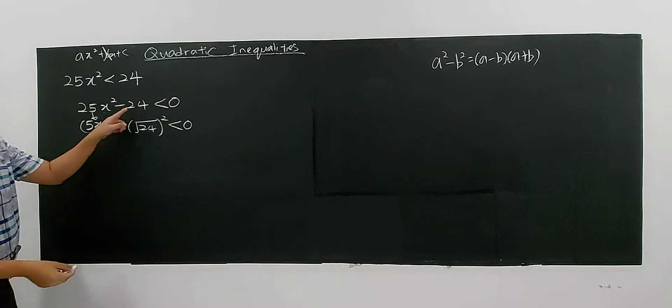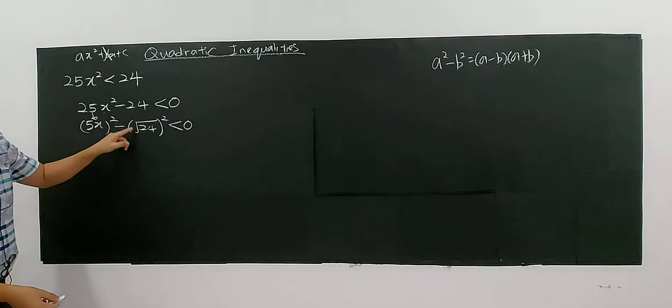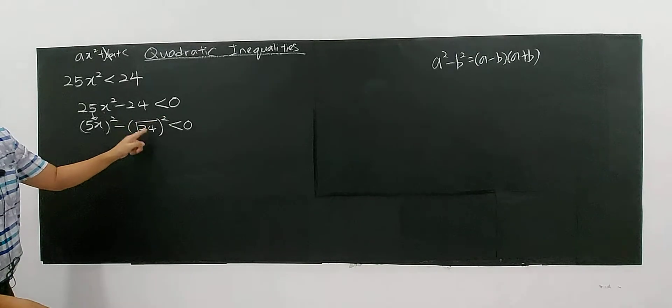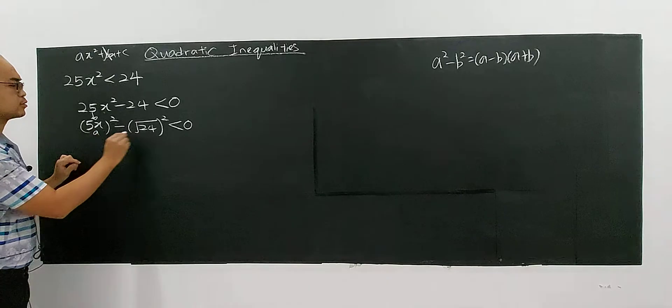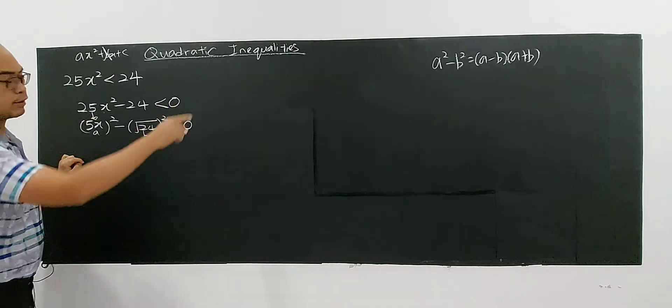Because 24, if you square root, if you go and square, you are getting 24. So this one become b square. So a, this is going to become b. So follow that formula.